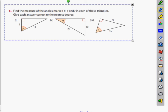Okay guys, these ones are right. Find the measure of each of the angles marked P, Q, and R in each of these triangles. Give each answer correct to the nearest degree. Anybody have any idea how to do this? Do what you always do. Just make a list and use whichever one you can use. Which one do you think we can use for the first one?